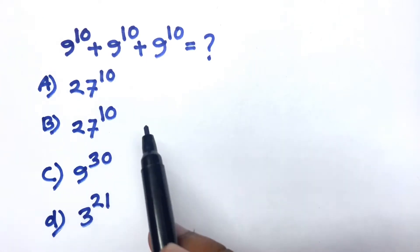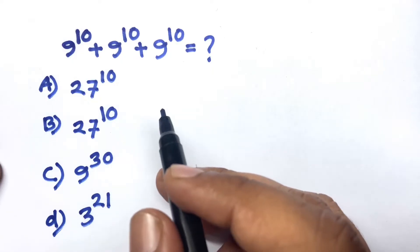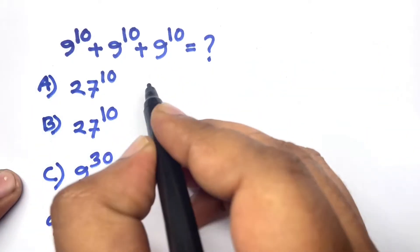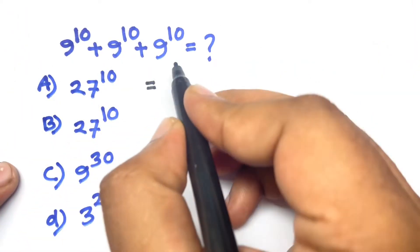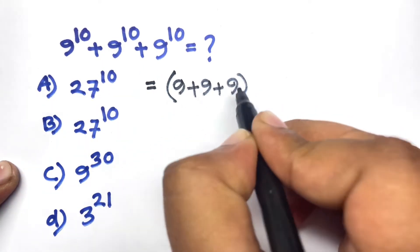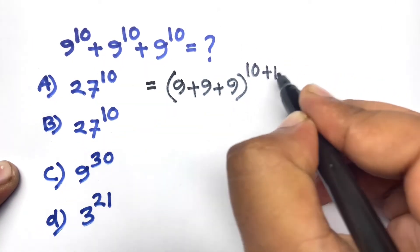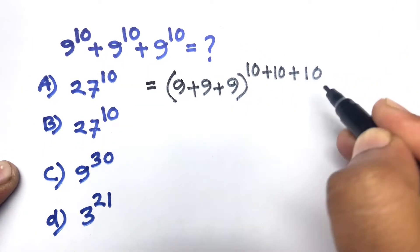Hello everyone, this question is 9^10 + 9^10 + 9^10. I'll find out what is the right option. First of all, I can say sum of base here is 9 + 9 + 9, and sum of power here is 10 + 10 + 10.